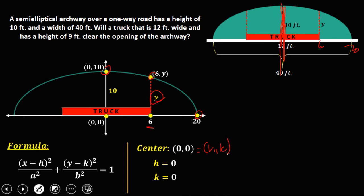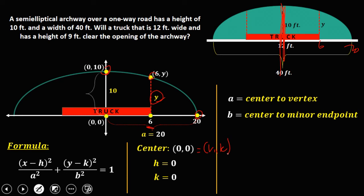Then to solve for a, so a, that's the center to vertex. So center to vertex, that's a. So a is 20. And b, that's center to minor endpoint. So center to minor endpoint, that's b. So b is 10. So since we have all the values, the a, b, h, and k...